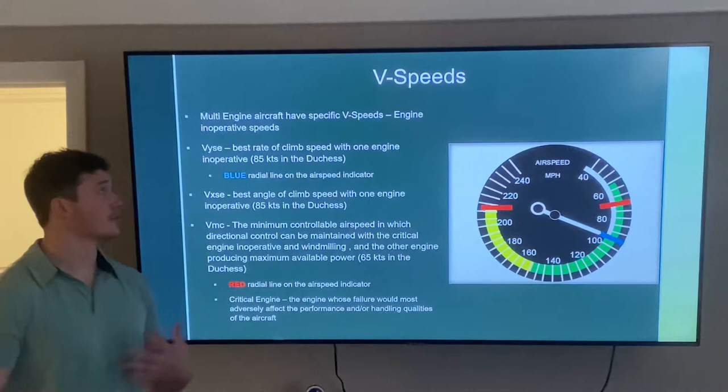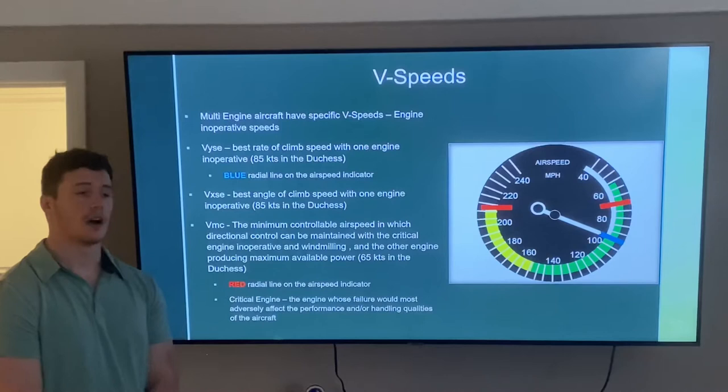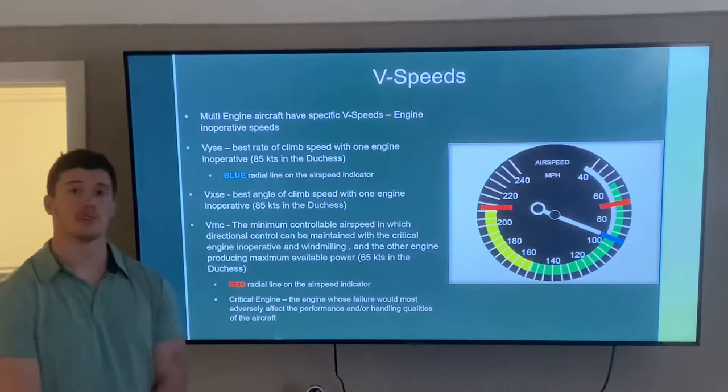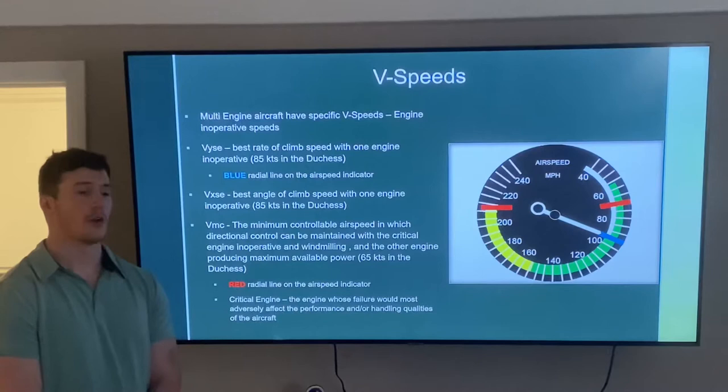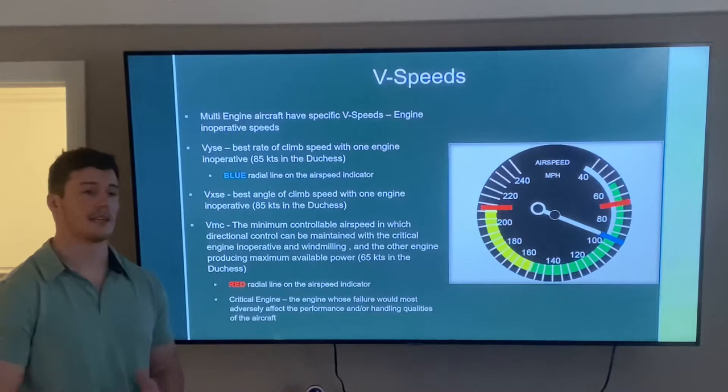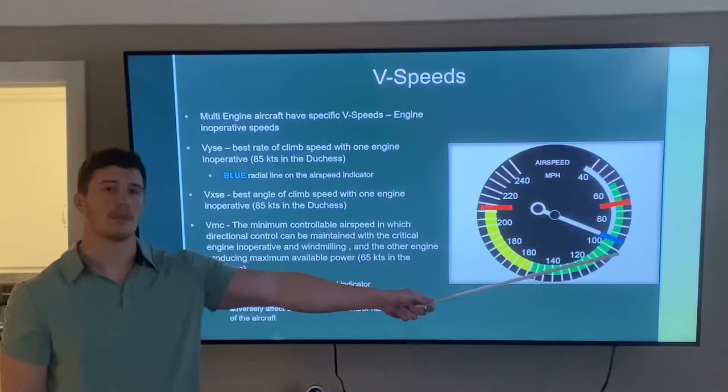First up, V speeds. Multi-engine aircraft have additional V speeds specific to losing an engine. The first is VYSE, which is our best rate of climb with one engine inoperative — 85 knots in the Duchess. We want to stay above this speed at all times to maintain directional control and achieve our best climb performance on one engine. It's identified on the airspeed indicator by the blue radial.